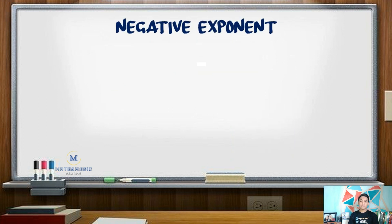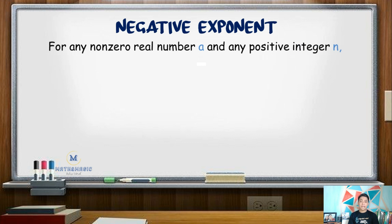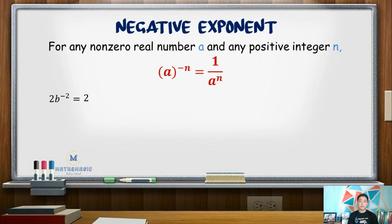For negative exponent, for any non-zero real number a and any positive integer n, a raised to negative n equals 1 over a raised to n. In short, we get the reciprocal of the algebraic expression when the exponent is negative. For example, 2b raised to negative 2: the coefficient 2 has an exponent of positive 1, so it stays in the numerator. For b raised to negative 2, we get the reciprocal, making it 1 over b squared. Multiplying 2 and 1 over b squared gives 2 over b squared.